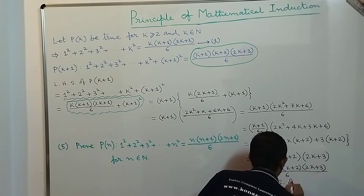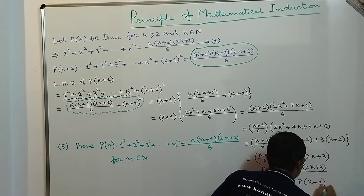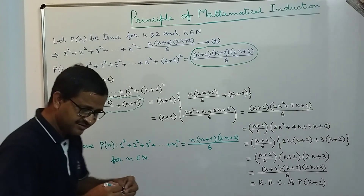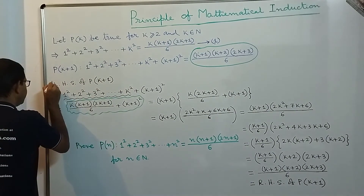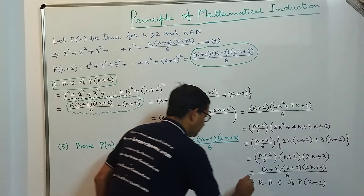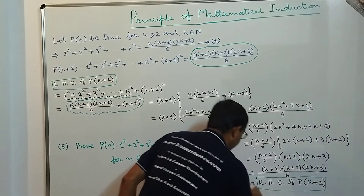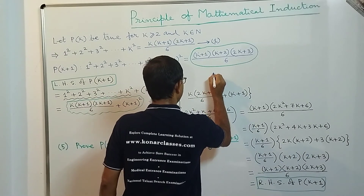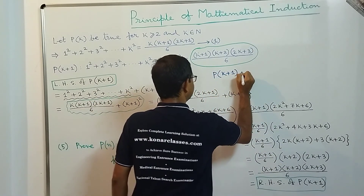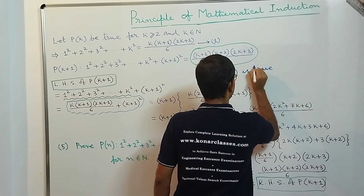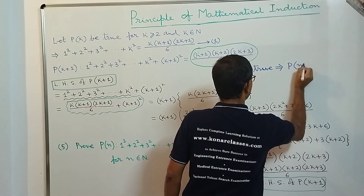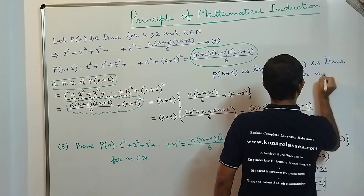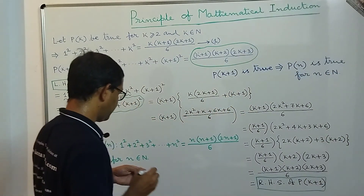Therefore LHS of P(k+1) = (k+1)(k+2)(2k+3)/6, which equals RHS of P(k+1). So LHS of P(k+1) equals RHS of P(k+1), meaning P(k+1) is true. This implies P(n) is true for all n ∈ ℕ.